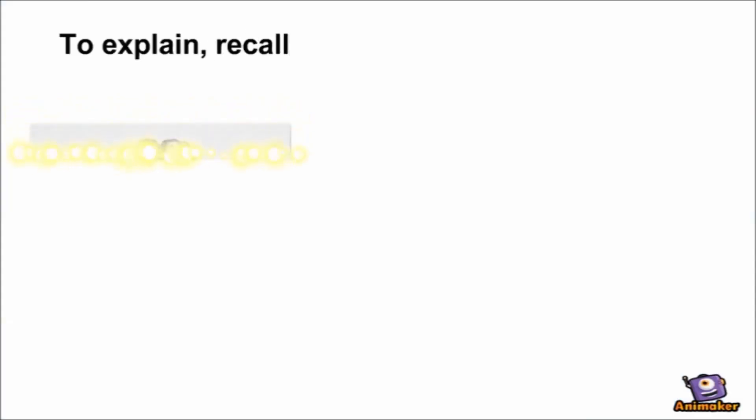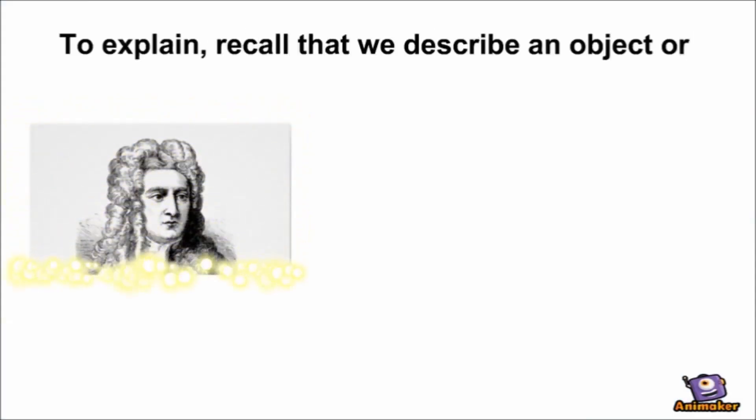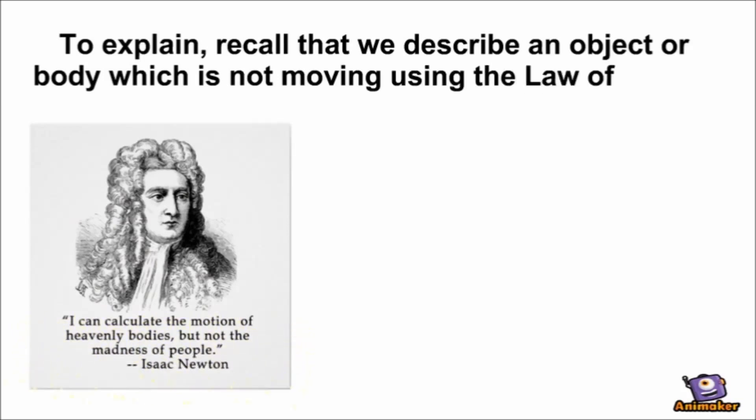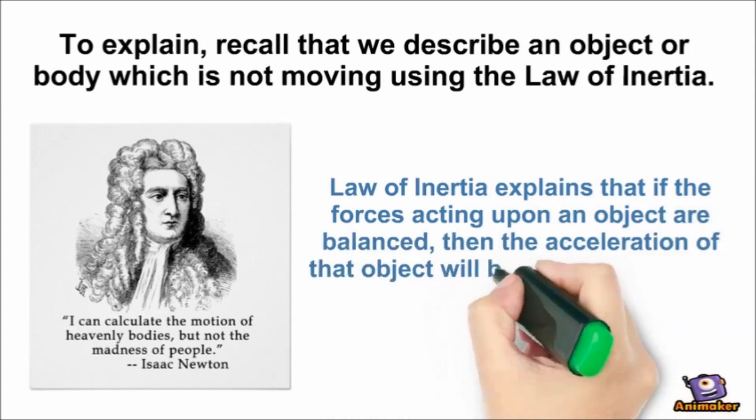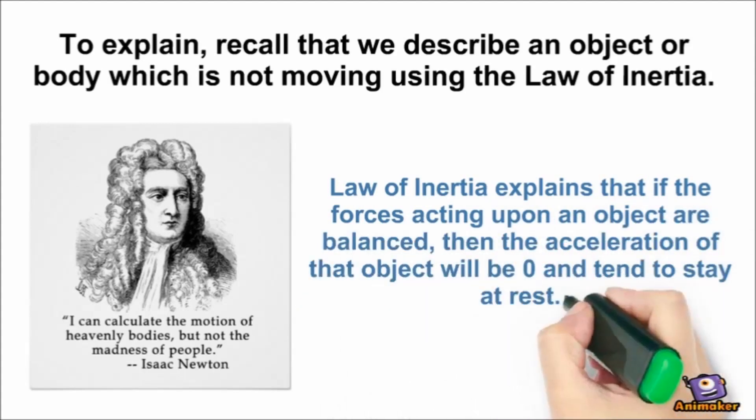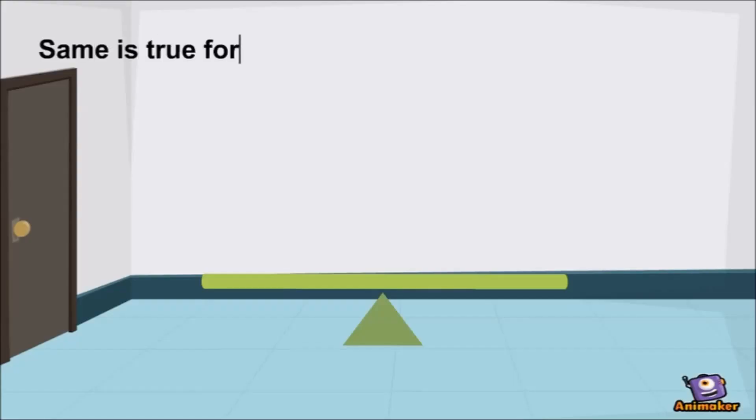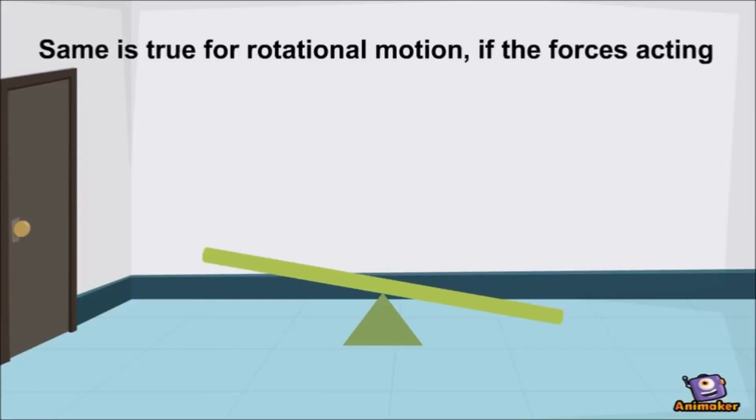To explain, recall that we describe an object or body which is not moving using the law of inertia. Law of inertia explains that if the forces acting upon an object are balanced, then the acceleration of the object will be zero and tend to stay at rest. Same is true for rotational motion.